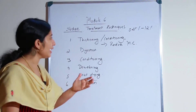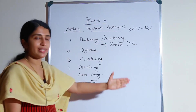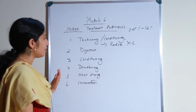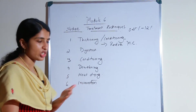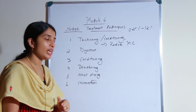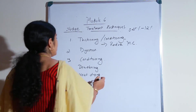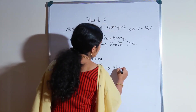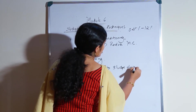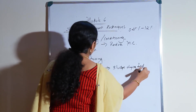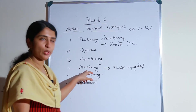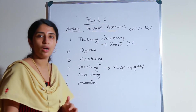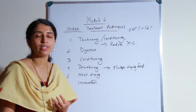Next is dewatering. Already in the thickening stage the moisture content will be reduced up to 90%, but there is still moisture content that needs to be reduced further, and that is done using dewatering techniques. The dewatering system used for sludge is called a sludge drying bed. In the dewatering process we can reduce the volume of the sludge and also reduce the moisture content further.